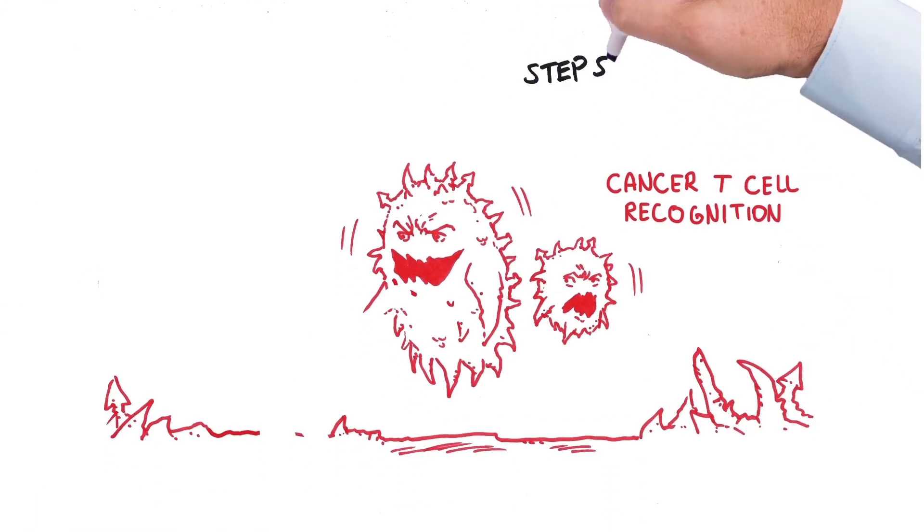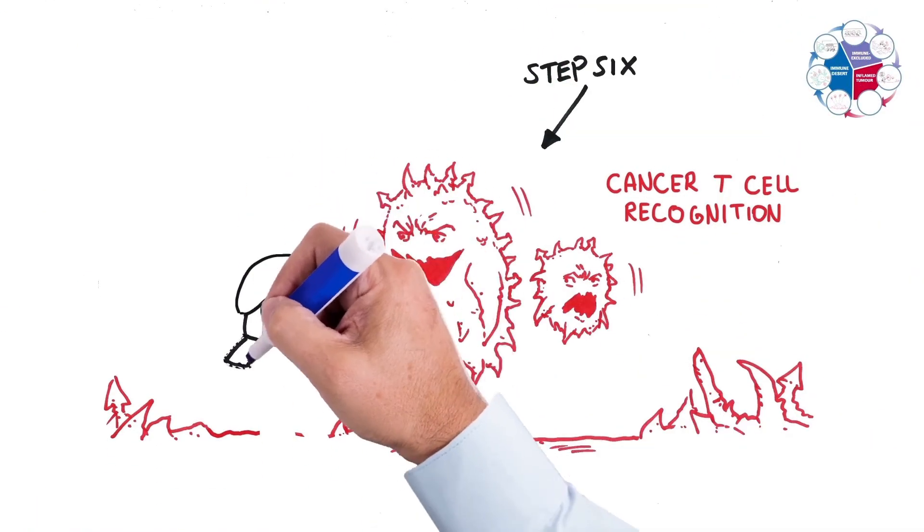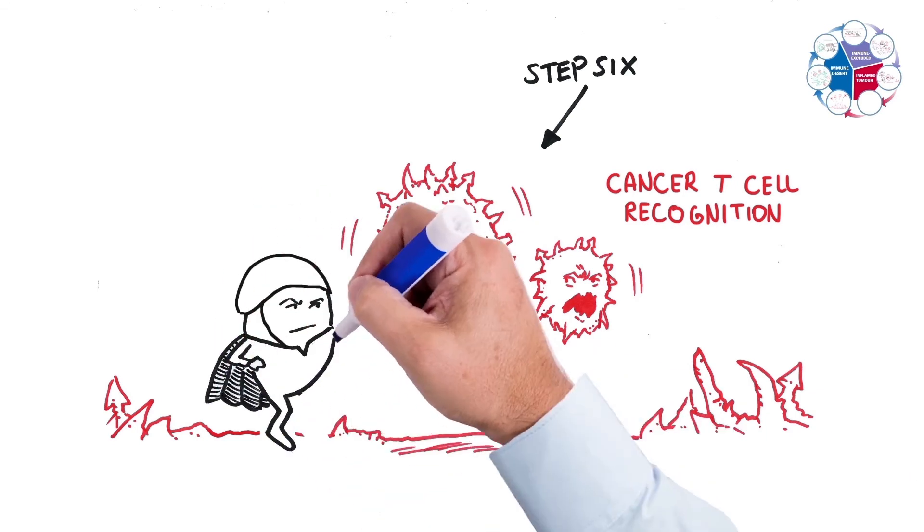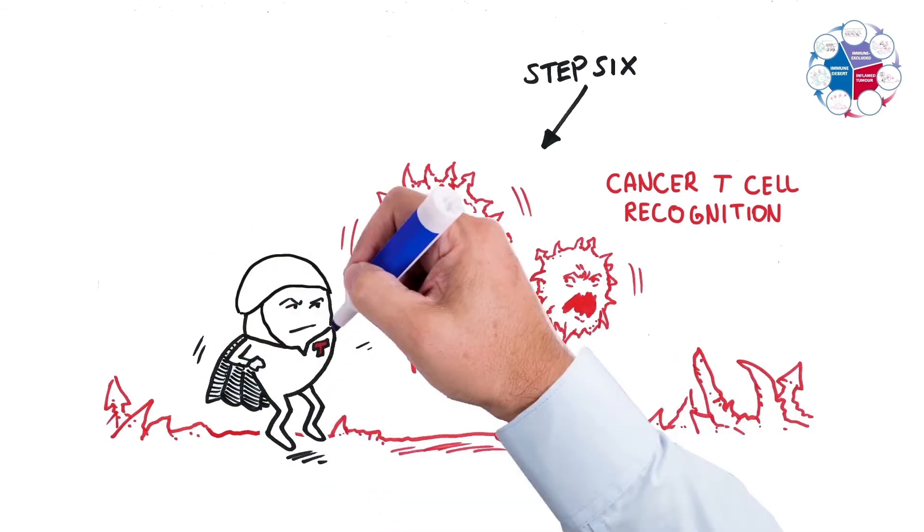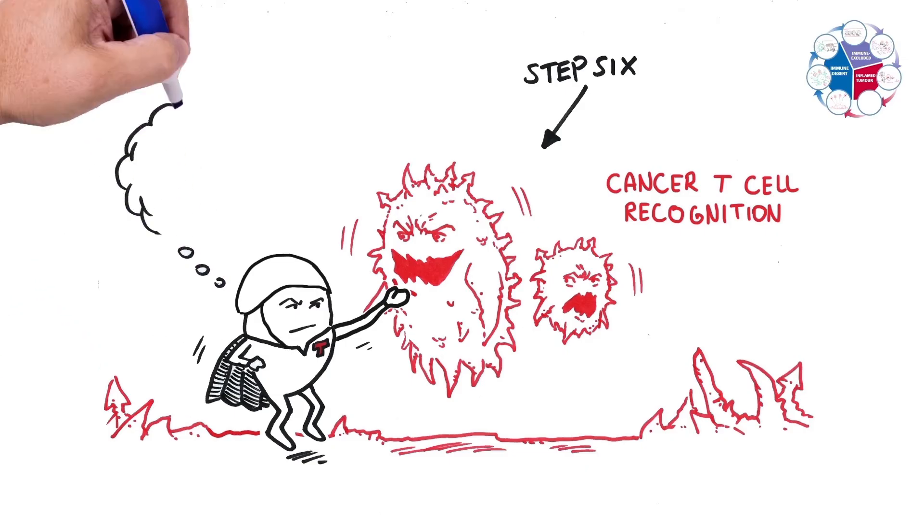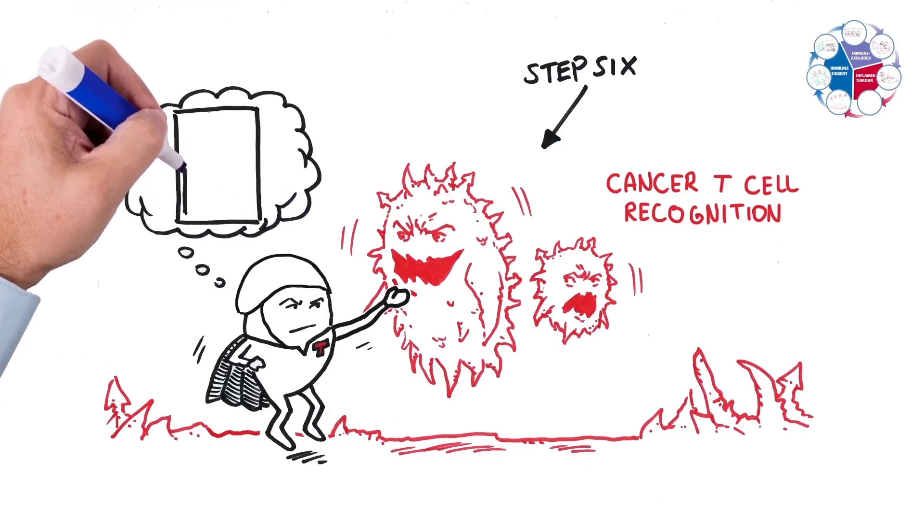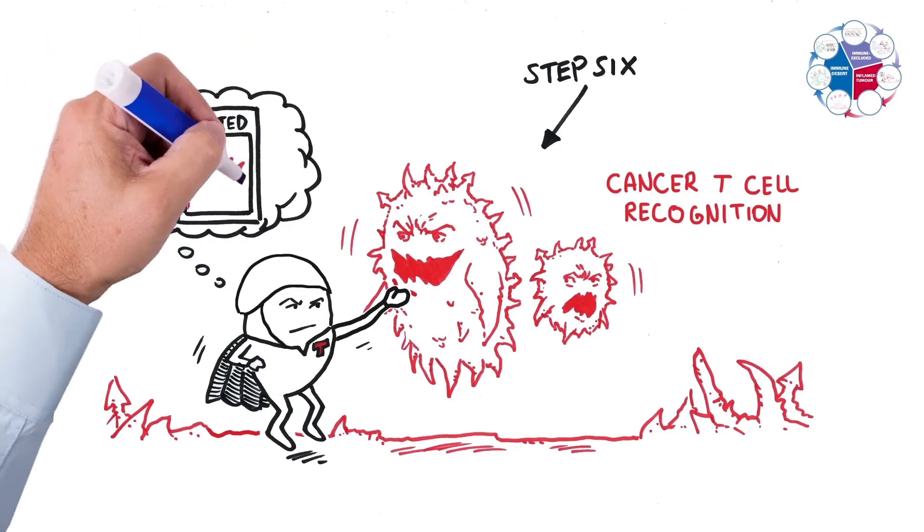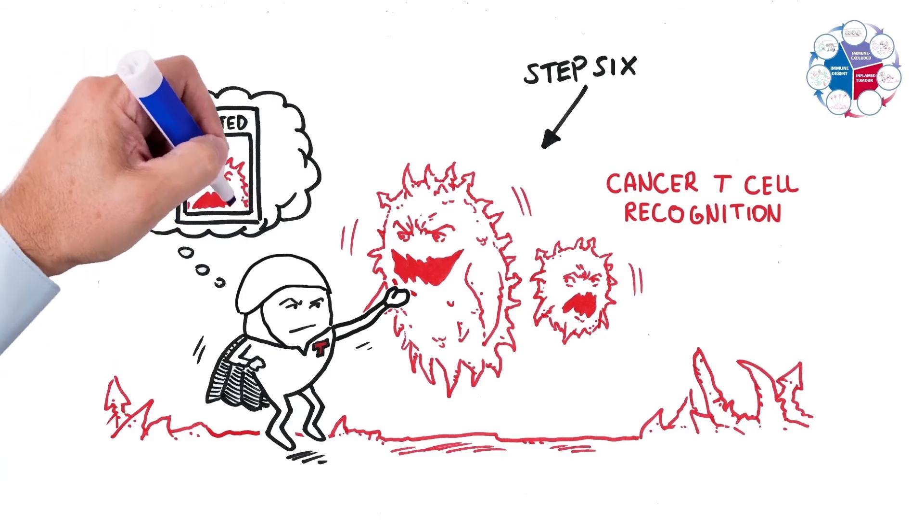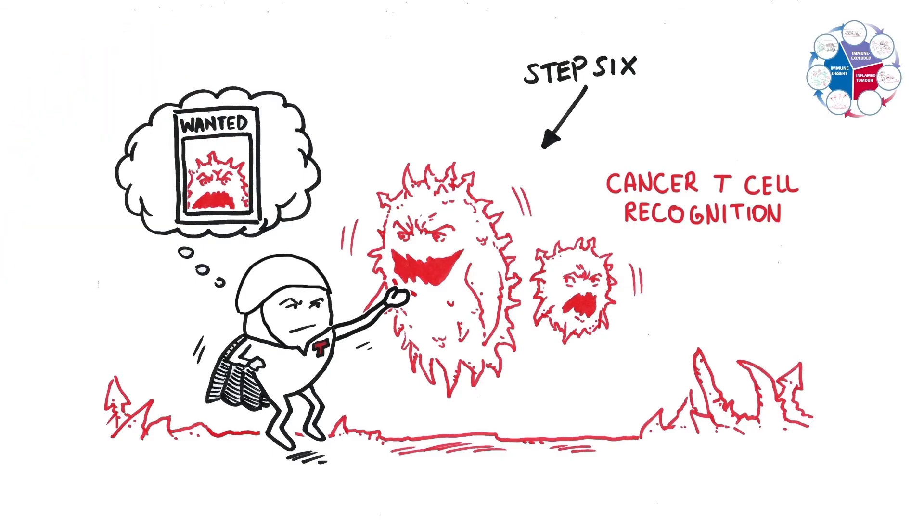Step six, the T cells are in the tumor microenvironment and now have to recognize a cancer cell. And the T cells can do this very specifically. They are targeted to very specific protein bits. And so if they find those protein bits on the surface of a cancer cell, they will recognize that cancer cell.